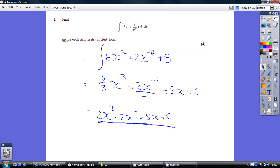The minus 2 becomes minus 1 and we divide by the minus 1. 5 becomes 5x and don't forget the constant.